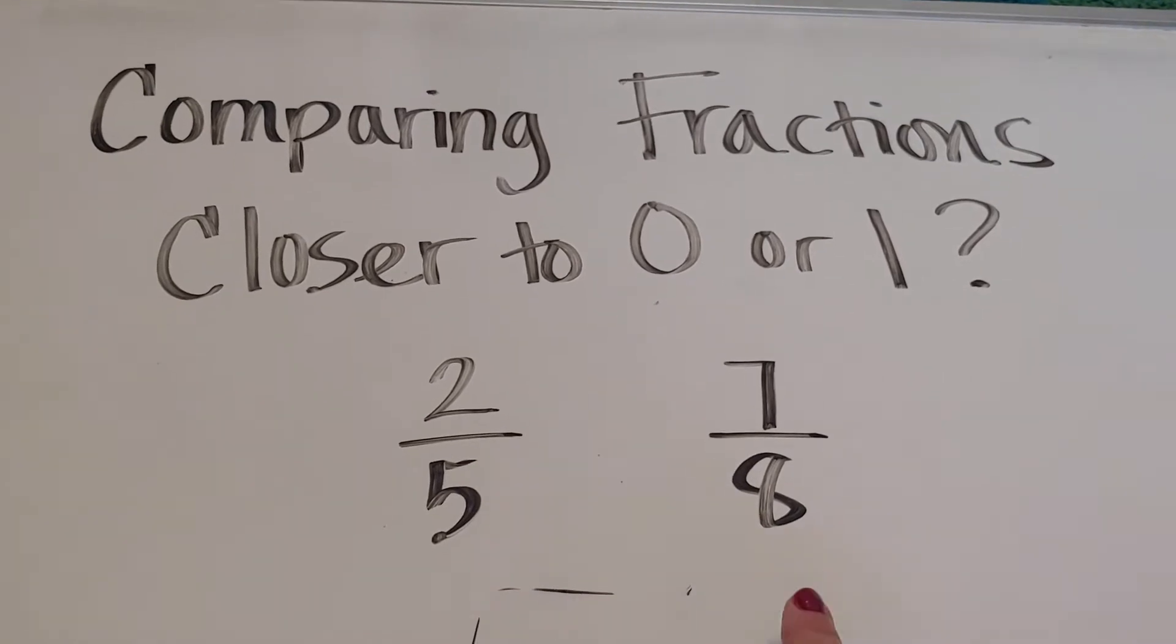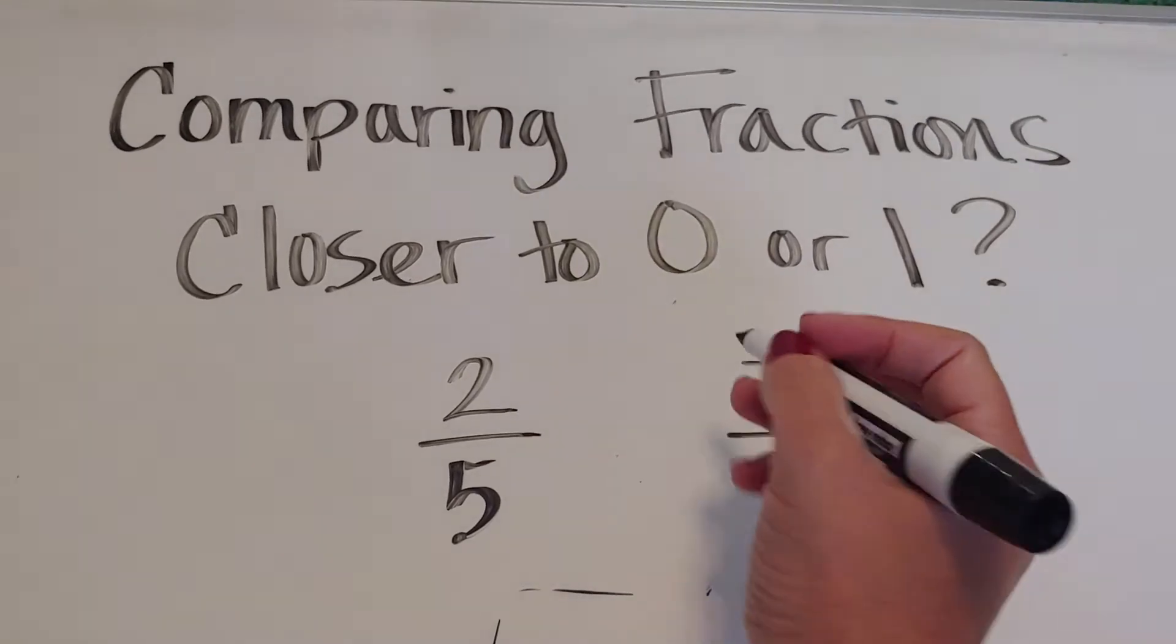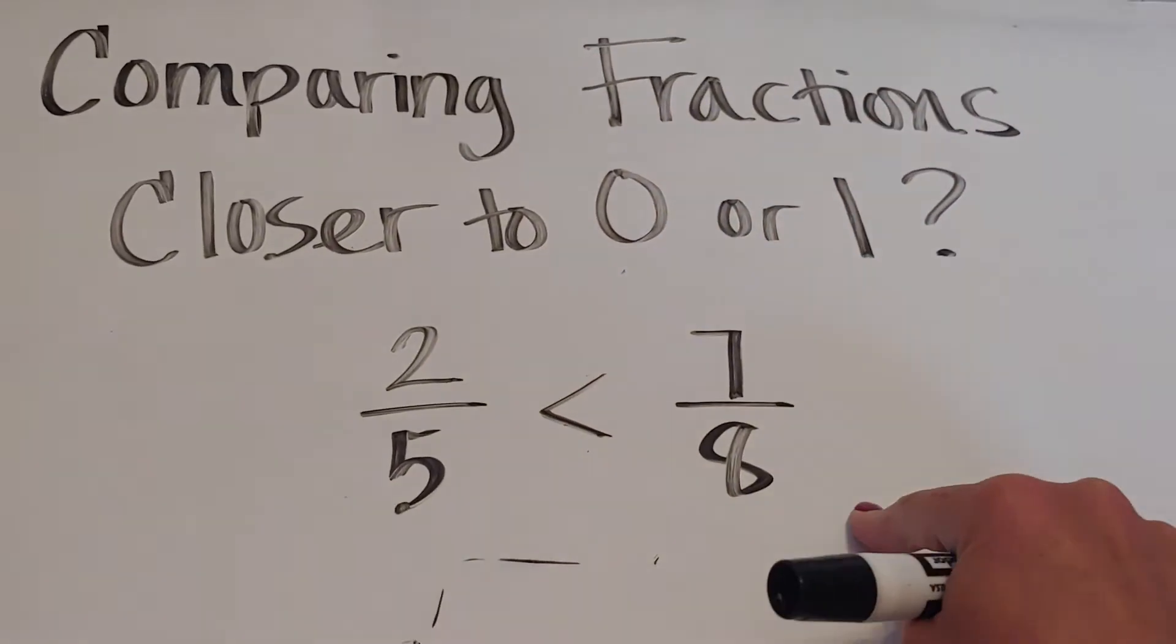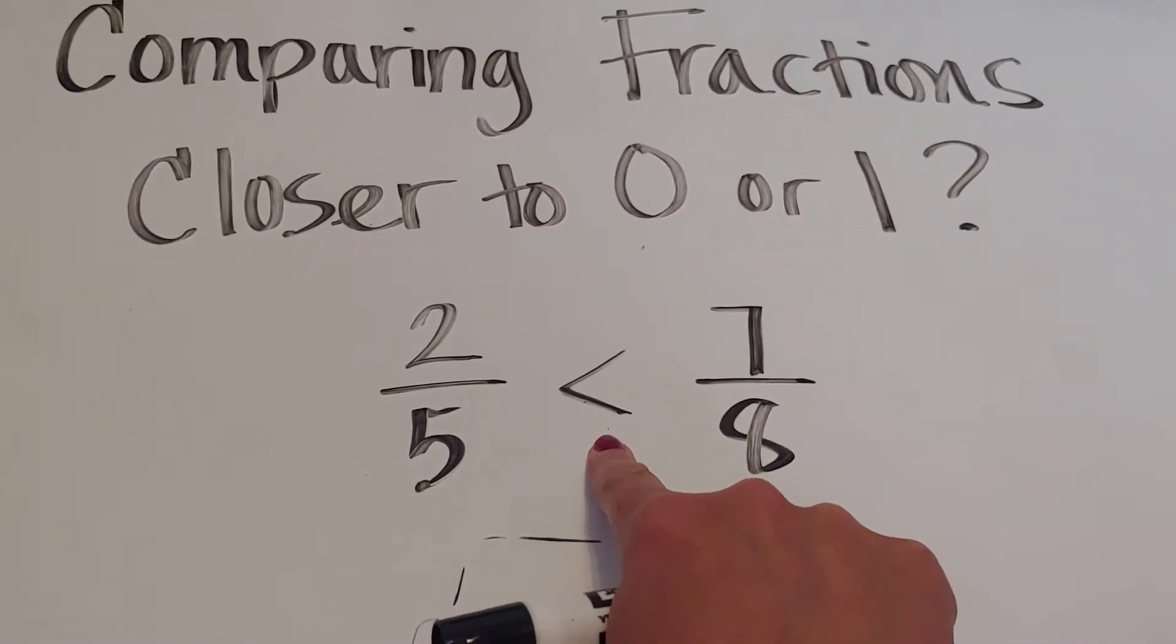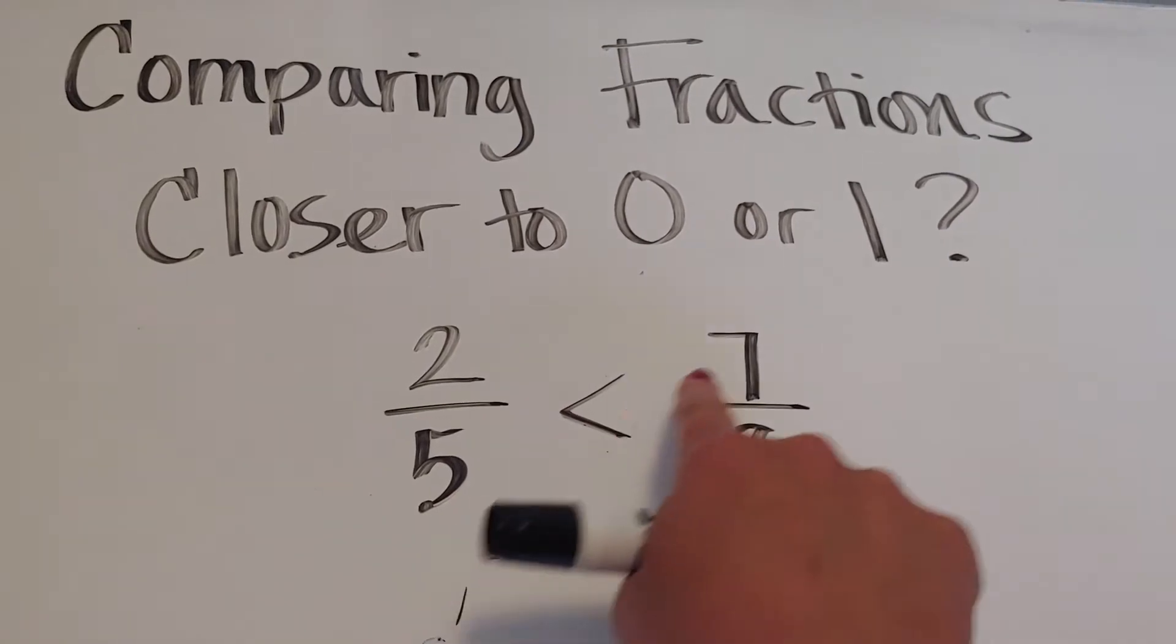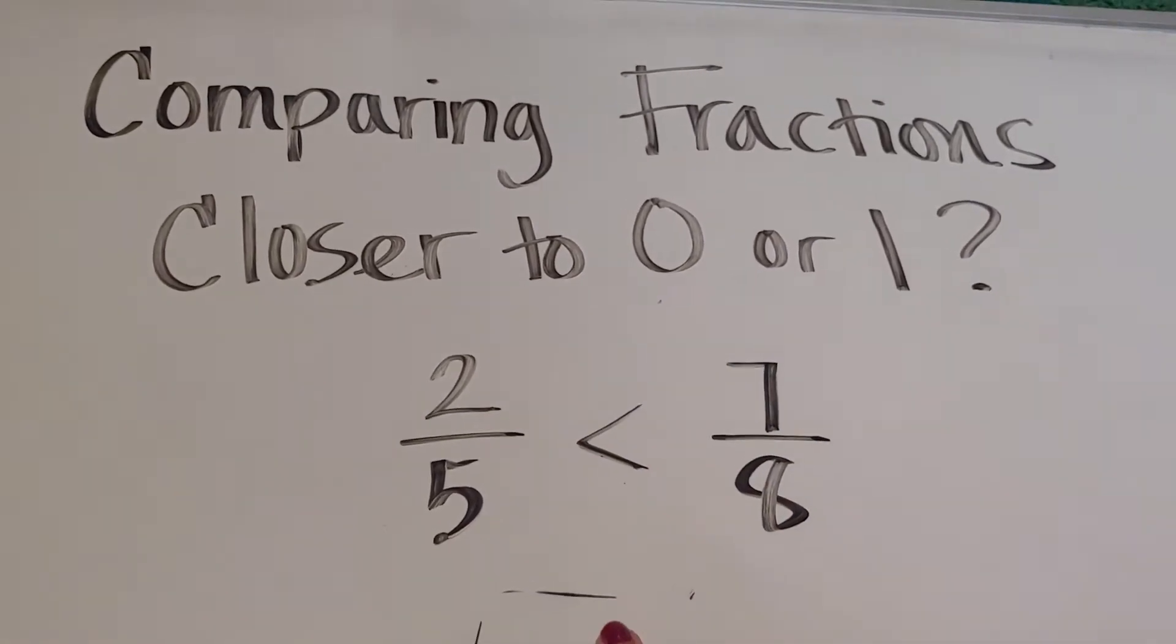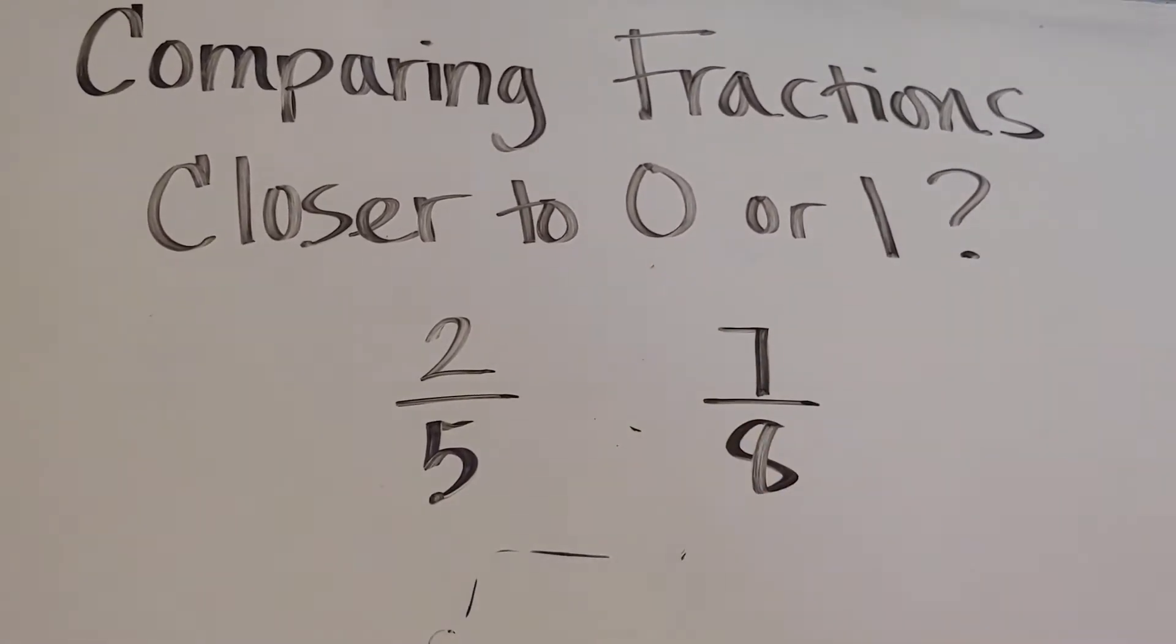As adults, we probably know which one is bigger. Seven eighths is bigger, two fifths is smaller. We use the less than symbol to show that two fifths is less than seven eighths. But how are you going to explain this concept to your students?